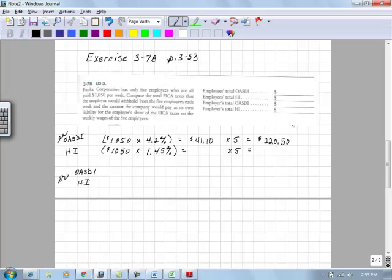For the HI portion of this, when we multiply that 1050 times 1.45%, we get 15.225 for each employee. And that has to be rounded before we move on. So this rounding is 15.23 times the five. Rounding for payroll must take place at every level. So once we have that rounded, take it times five, $76.15.